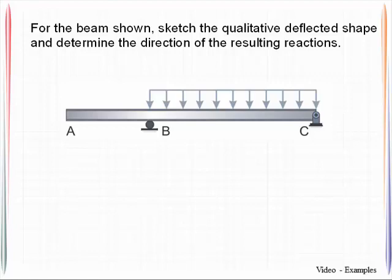What we know right off the bat is that because of the roller at point B, point B cannot move up and down. The pin at point C means that it cannot move up and down either, or side to side for that matter.